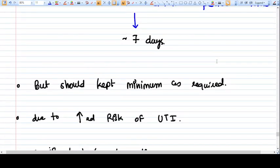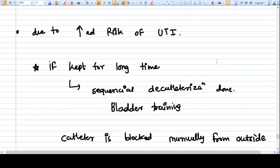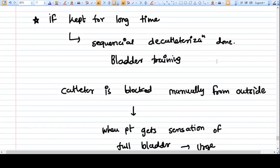The catheter should be kept minimum as possible. It should not be kept unnecessarily because there's an increased risk of UTI, urinary infection. If you need to keep it for a long time, then sequential decatheterization should be done - that means bladder training should be done before removing the catheter. How is bladder training done? The catheter is blocked manually for some time until the patient gets an urge of urination. At that time, the catheter is opened or not obstructed, and the patient will feel like they're passing urine. Then again, block the catheter so the patient will feel the urge again. This bladder training should be done in case of extended period catheterization.